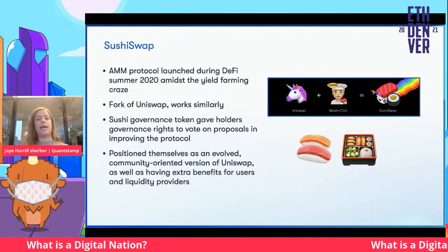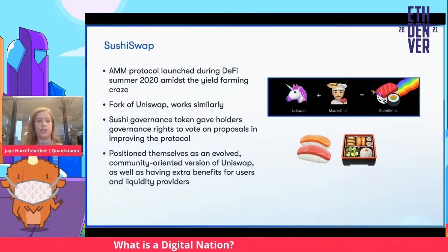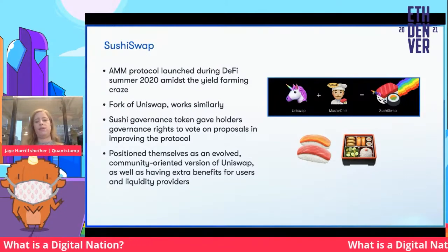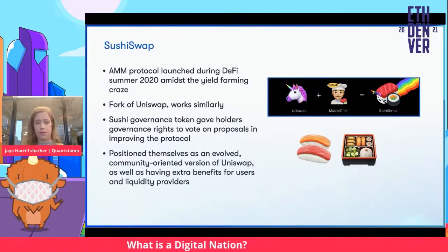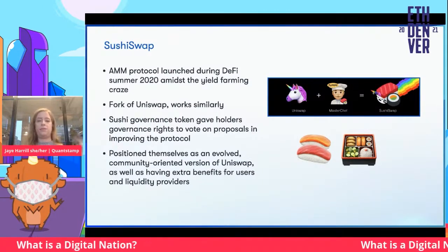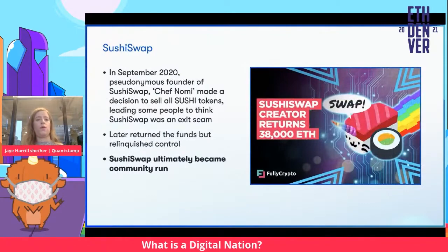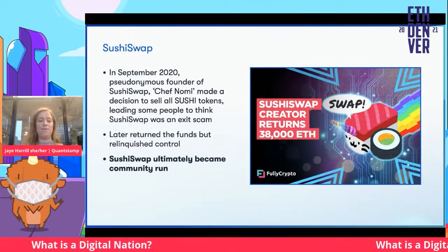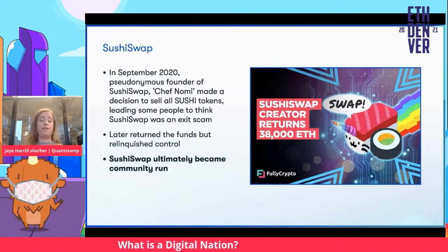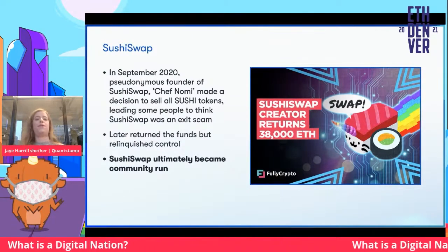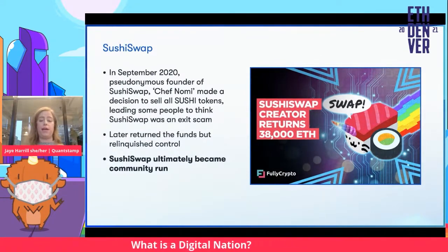SushiSwap has a DAO as a smart contract but operates as a decentralized organization. It was launched in 2020 amidst DeFi summer as a code fork of Uniswap — at the time, Uniswap didn't have a native token — and positioned itself as an evolved community-oriented version. There was too much trust in one person: Chef Nomi, the pseudonymous founder, rugged everyone, but later returned the funds and relinquished control. Now SushiSwap is ultimately community-run.